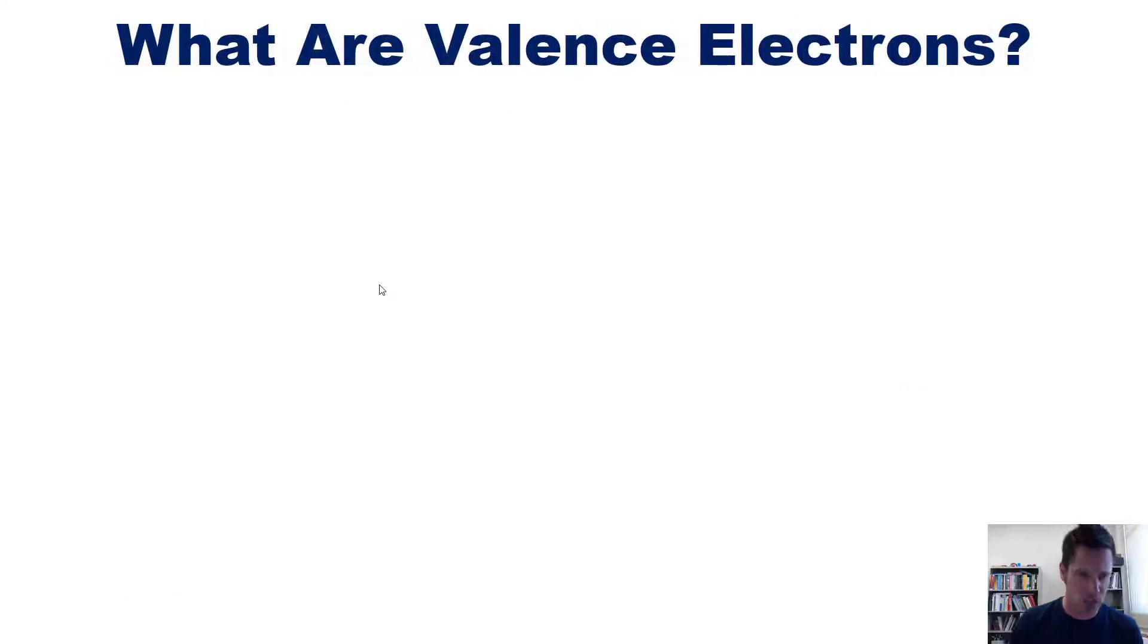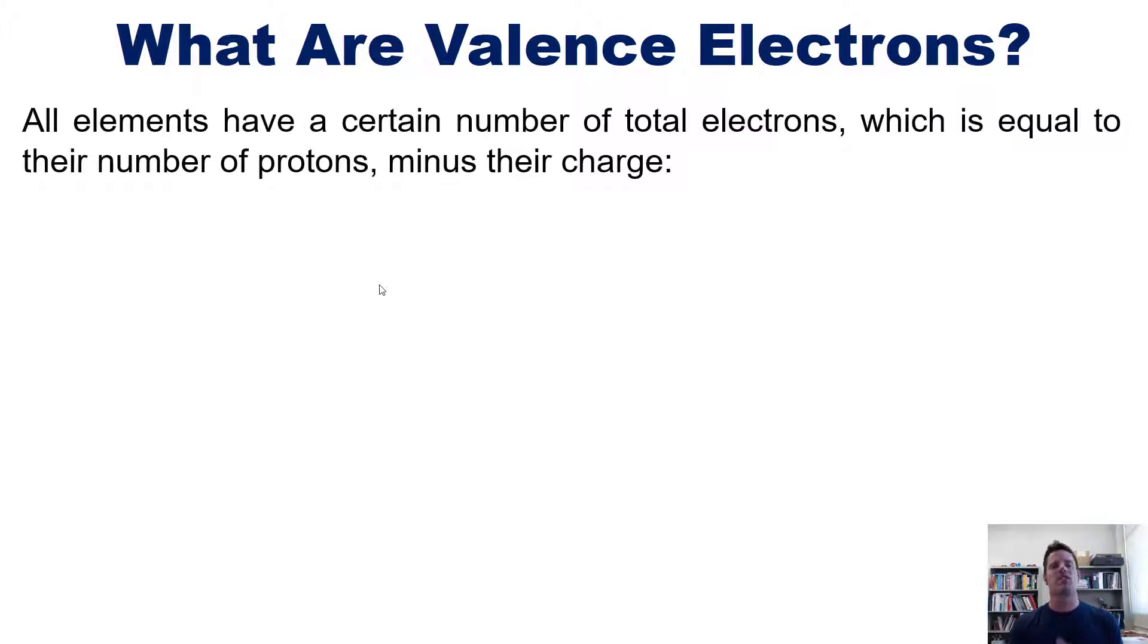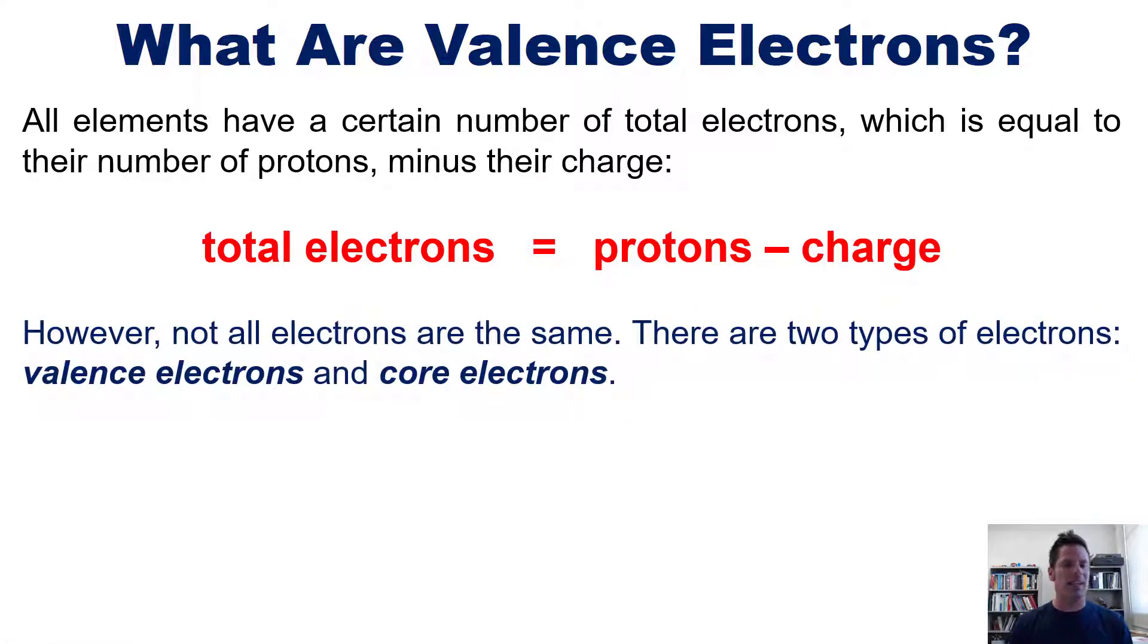So all elements have a certain number of total electrons, which is equal to their number of protons minus their charge. So if you have a totally neutral atom, that is, it has a zero charge, then its number of electrons that are each negatively charged is equal to its number of protons, which are positively charged. Make sense? With that said, not all electrons are the same. You see, there are two different types of electrons, valence electrons and core electrons.